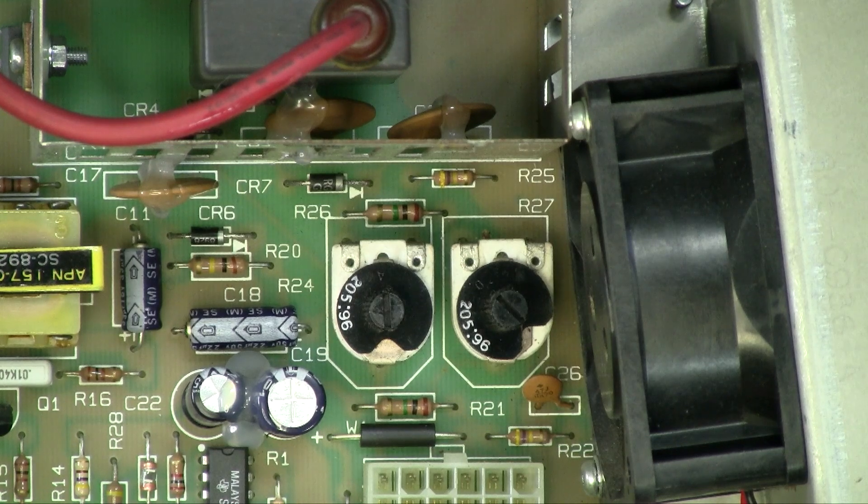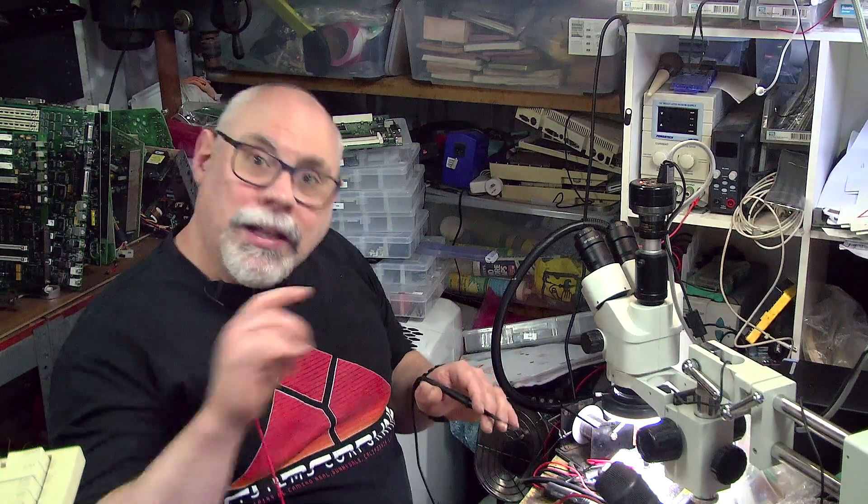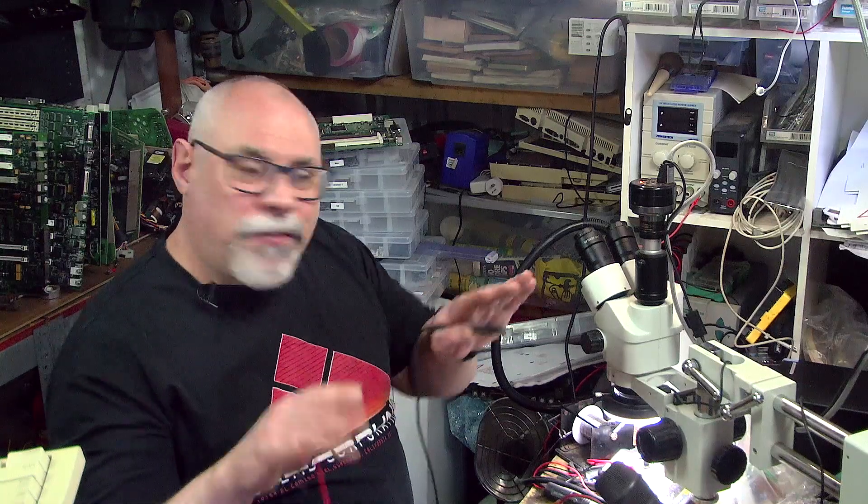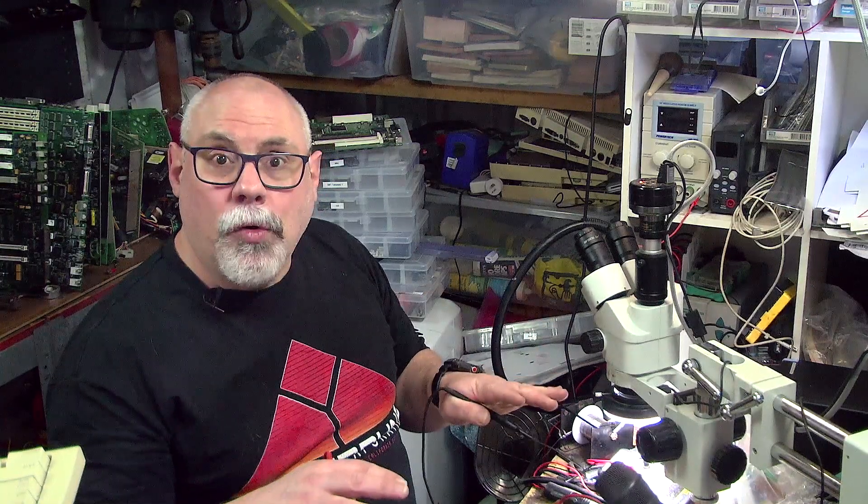Now we're going to actually measure this with a multimeter. The important thing with measuring resistance in circuit is that you can sometimes get a reading less than the resistance of that resistor. That's because it might actually find a different path around the board that might actually be of less resistance than that resistor.